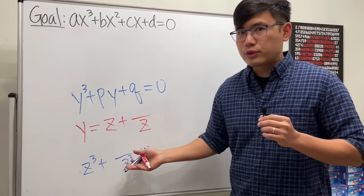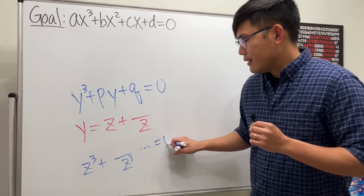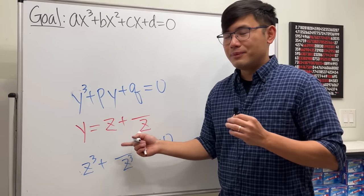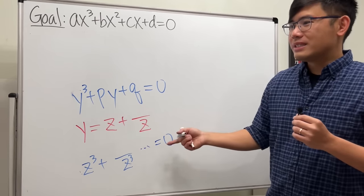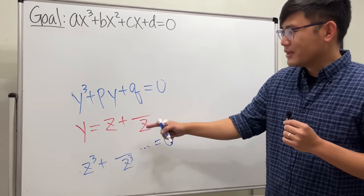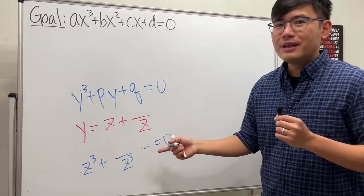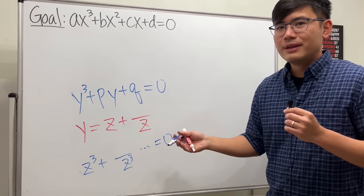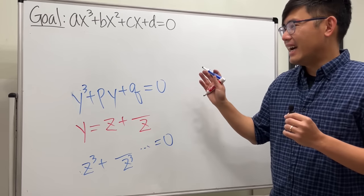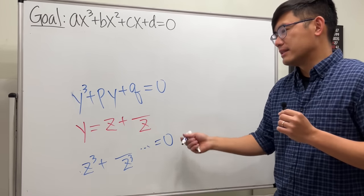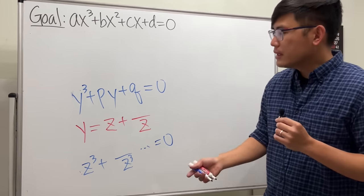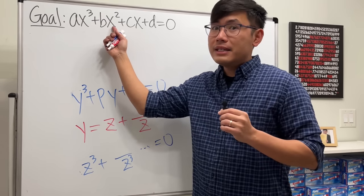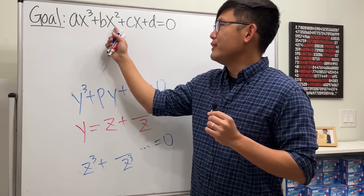Ideally, if you can get rid of the middle terms, that will be great. You will see that at the end this is going to be a quadratic equation in terms of z³. This substitution is called the Vieta substitution, and I did the same thing with the cubic formula special case a few months ago — you can check that out.